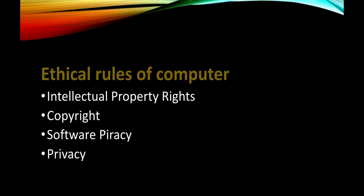The first form is internet piracy. If you download unauthorized material over the internet, it is called internet piracy. The second one is end user piracy. Each and every software has its own license, so if anyone copies any software without a license, it is known as end user piracy.